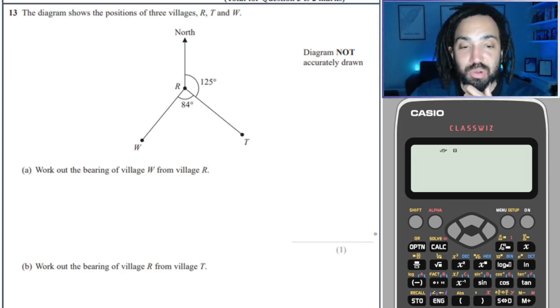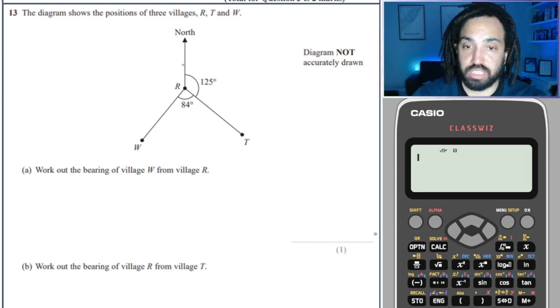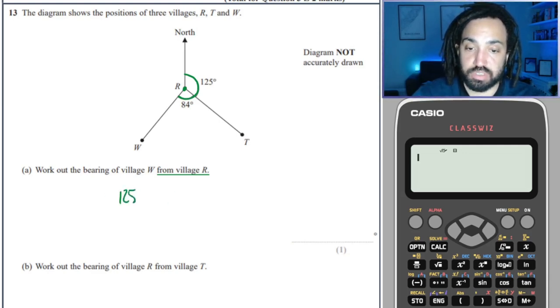Okay, here we go. Work out the bearing of the village W from village R. Okay, so that means I'm starting, again, it's always where you're starting from, that's where you start. And that means I'm at R right here, and then I go all the way around until I hit the line that W is on, which is right there. So it's that angle that I need to turn through, which is obviously 125 plus 84, which is equal to 209.